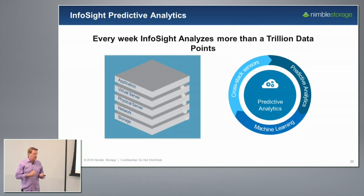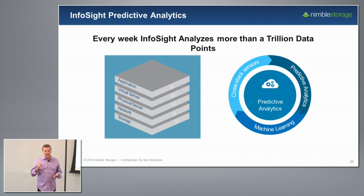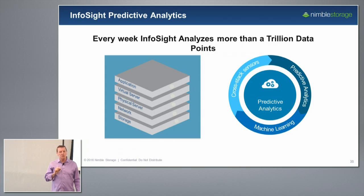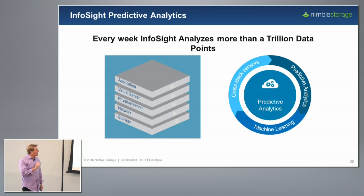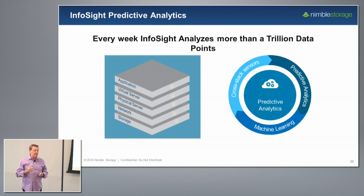Every day we send 25 billion text messages via cell phones. Back in college I remember we figured out how long it would take to count to a million verbally — the answer was days and days. If you think about 25 billion text messages, you would have to count to a million 25,000 times — you cannot do that in your lifetime. It turns out that in the roughly 45 minutes we've been talking, that's how many data points — 25 billion — we've collected from our install base while we've been sitting here.